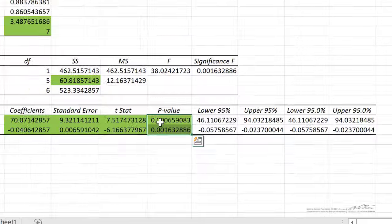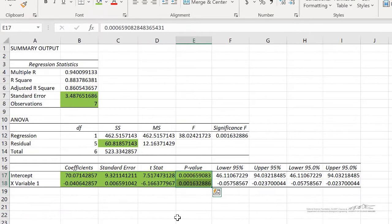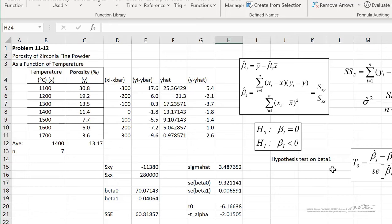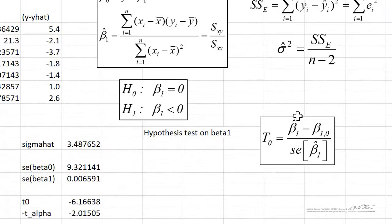So I've shown you how we can do all of these things now by using simple Excel formulas. If you wanted to perform a hypothesis test on the intercept, you would just replace the subscript 1 here with 0 for the intercept. Thanks for watching.